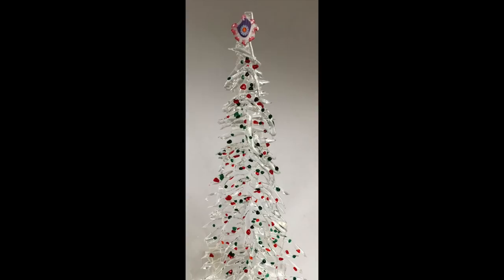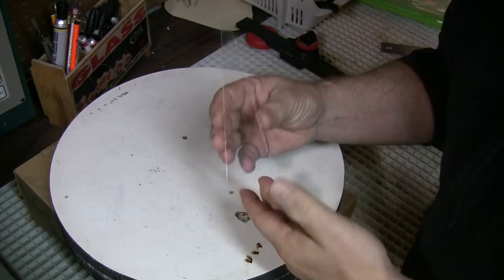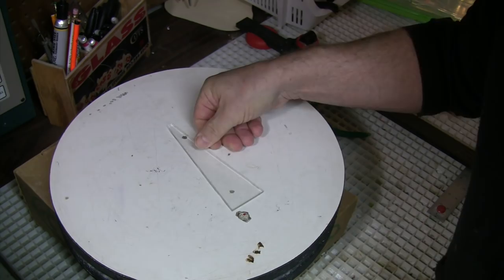You can choose to use a base like this one, or skip this and assemble right on the kiln shelf. We'll do one of each together and consider their pros and cons.